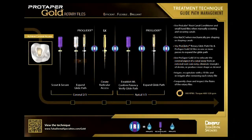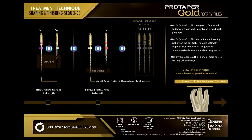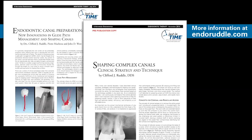Dentsply Tulsa Dental developed a wonderful technique card that my multimedia team helped create. One side of the card perfectly explains glide path management as we described in this episode. Flip the card over, and there's an emphasis on shaping canals with rotary files — the sequence just as we've described today. There are also supporting articles available; you can go to my website, and they're downloadable PDF files for free, going into more detail than a webinar can.